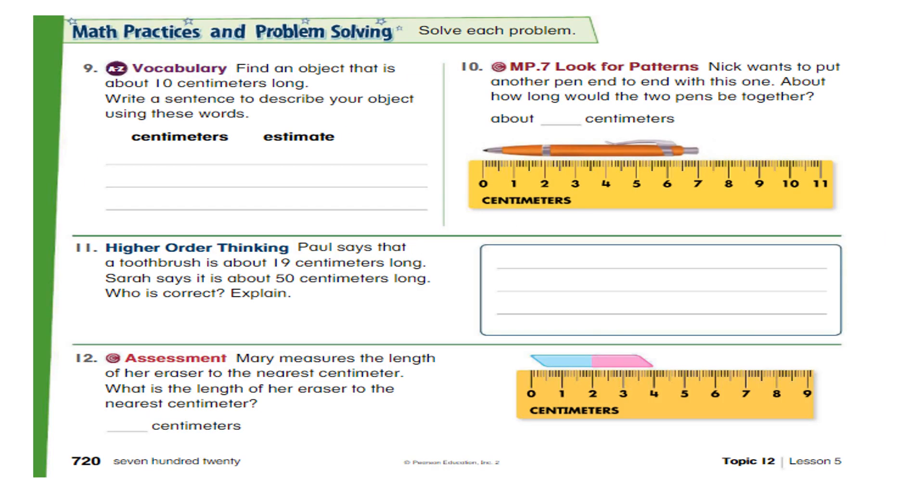On the next page, question nine, find an object that is about 10 centimeters long. Write a sentence to describe your object using these words. So just look around in your room and search any object that is about 10 centimeters long. And then you have to write here two or three sentences about that. And you have to use the word centimeter and estimate while writing the sentences.